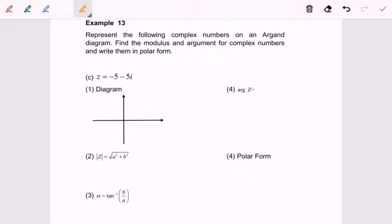Hello everyone, so now I'm going to discuss example 13c. Given that z is equal to negative 5 minus 5i. First thing, we are going to locate the z. As we all know, this is the imaginary axis and this is the real axis, and the location of z will be in the third quadrant.